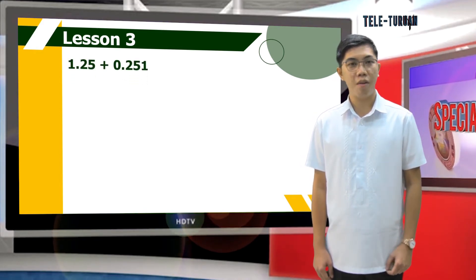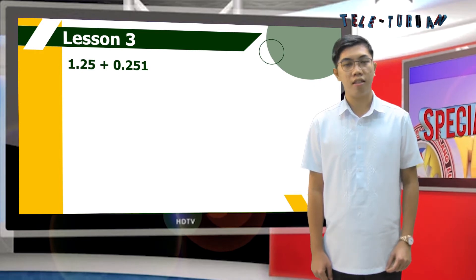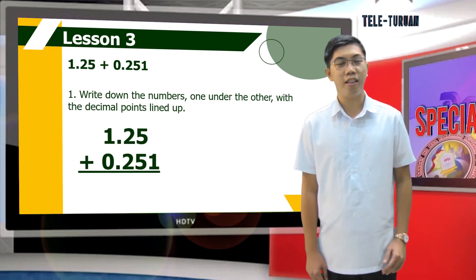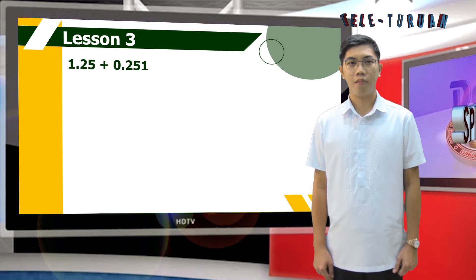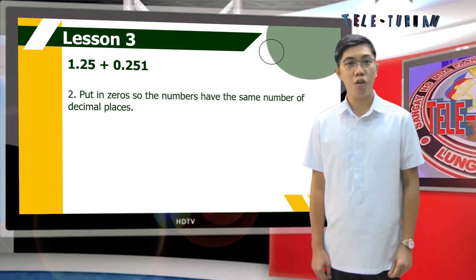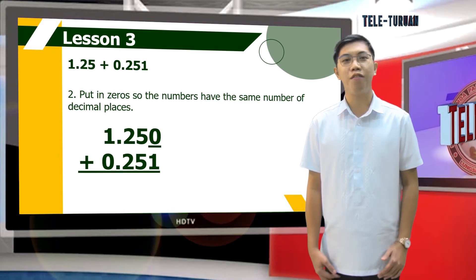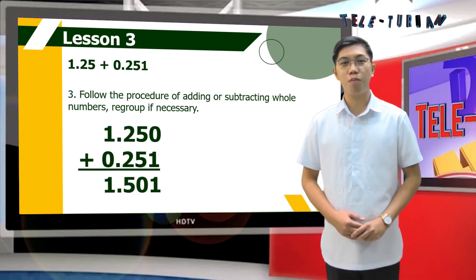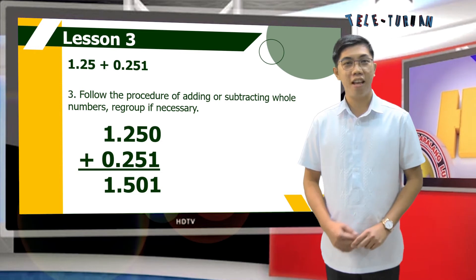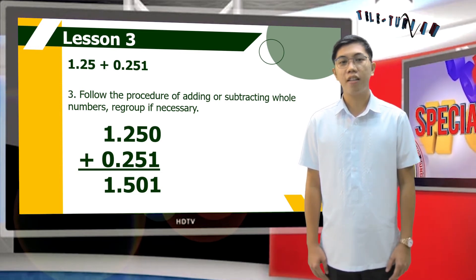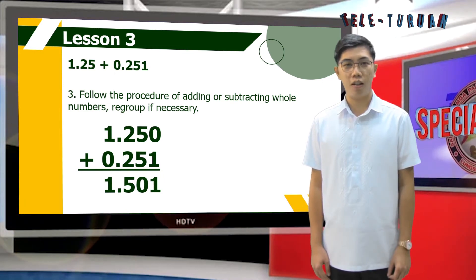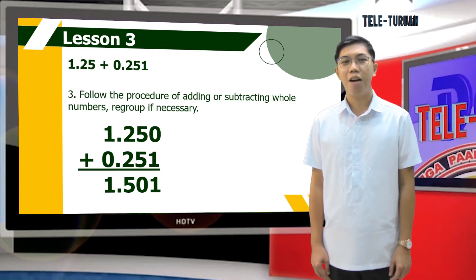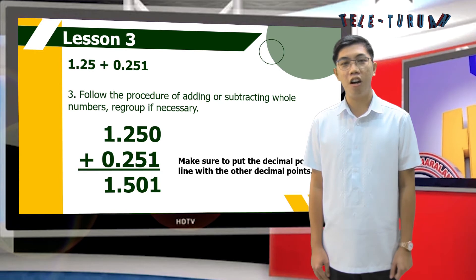Let's add 1 and 25 hundredths and 251 thousandths. First step, write down the numbers one under the other with the decimal points lined up. Second step, put in zeros so the numbers have the same number of decimal places. Third step, follow the procedure of adding whole numbers, regrouping if necessary. The sum of 1 and 25 hundredths and 251 thousandths is 1 and 501 thousandths. Make sure to put the decimal point in line with the other decimal points.